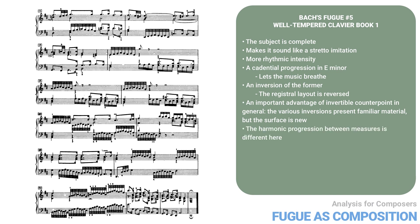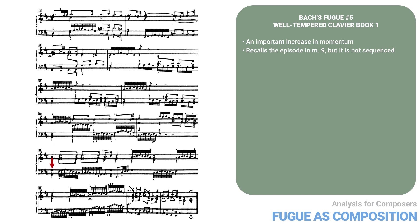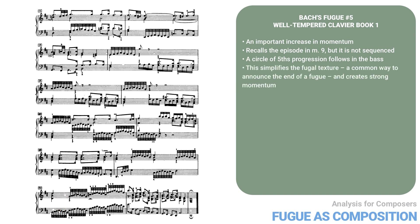Note also that the harmonic progression between measures is different here. The sequence is finished in measure twenty with an important increase in momentum — motive A is present on every beat, leading to non-stop 32nd notes. Measure twenty-one echoes the episode in measure nine but is not sequenced this time. Instead it lands on a 6/5/4/2 chord at the start of the bar and leads to two beats of 32nd notes, then to a perfect cadence in D major, the home key. But this is not convincing enough to finish the whole fugue. A circle of fifths progression follows in the bass: G, C sharp, F sharp, B, E, A, and D. In measure twenty-four the outer voices are in parallel tenths from the second beat onward, simplifying the fugal texture — a common way to announce the end of a fugue.